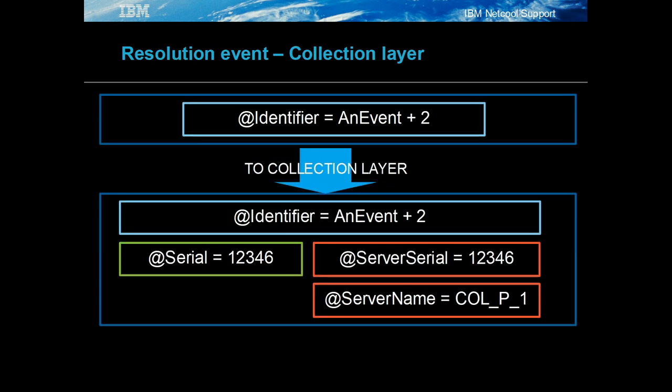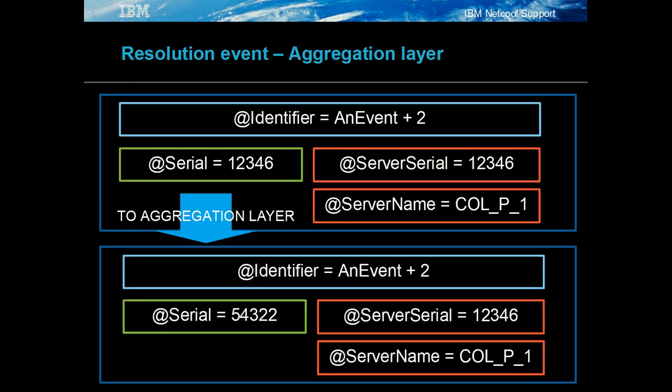When the resolution event is sent from the probe — in this case an event plus two — it is inserted as a new unique event and assigned a new serial: one, two, three, four, or six. The col_new_row trigger assigns the server name and server serial as before, with the server serial being this event's serial value. The collection to aggregation gateway forwards the event to the aggregation layer as a new insert. The event is assigned a serial of 5432 2. The ag_new_row trigger preserves the server name and server serial, so that together they uniquely define the event for the gateways.